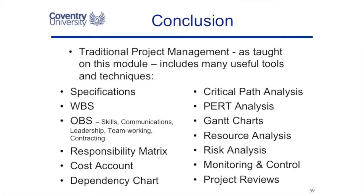During this module I've given you a list of project management tools and techniques that are useful whichever method you end up using: writing good project specifications, creating work breakdown structures — still useful in agile and critical chain — thinking about leadership, team working and communication issues, creating a responsibility matrix and a cost account, doing a critical path analysis or a PERT analysis, using PERT as a way of dealing with uncertainty, creating Gantt charts, doing a resource analysis, and smoothing out your resources.